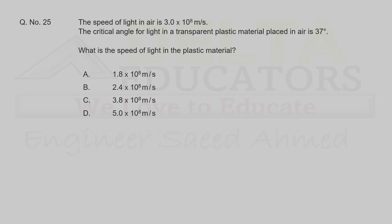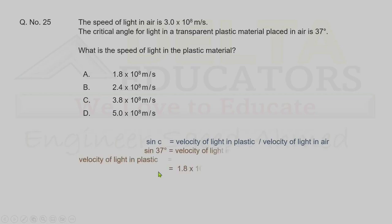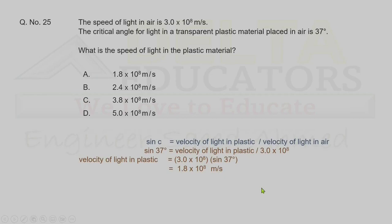Question 25. The speed of light in air is 3 × 10⁸ m/s. The critical angle in a transparent plastic in air is 37°. Using sin C = v_plastic / v_air: sin 37° × 3 × 10⁸ = 1.8 × 10⁸ m/s. Correct option is A.